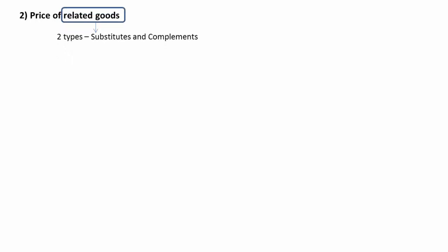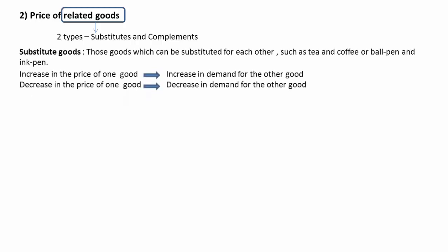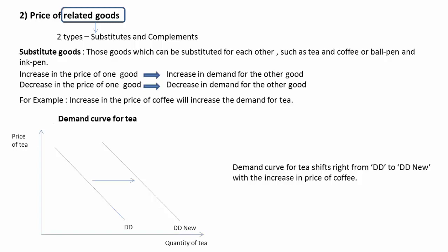The second factor affecting demand behavior is the price of related goods. Demand for a commodity is influenced by a change in the price of related goods. These are of two types: substitutes and complements. Substitute goods are those which can be substituted for each other, such as tea and coffee, or ball pen and ink pen. An increase in the price of one causes an increase in demand for the other, and vice versa. For example, an increase in the price of coffee will increase the demand for tea, shifting the demand curve for tea to the right. The demand curve will shift left with a decrease in the price of coffee.